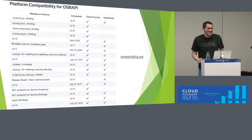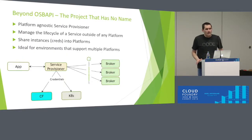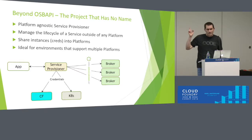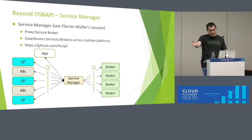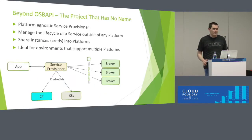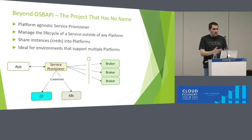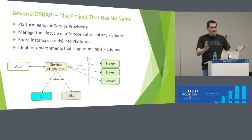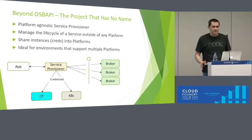A question was raised about whether the service provisioner is just a thought experiment or if there's actual code. Right now it is a thought experiment, and the speaker mentioned it because they find it really compelling. The service manager is cool but the constraints of not changing brokers or platforms make it feel a bit hacky. Instance sharing is a very big deal — IBM Cloud has Cloud Foundry, Bluemix, and Docker where you can create instances and bind them to applications running in all three, sharing the same credentials against the same instance.